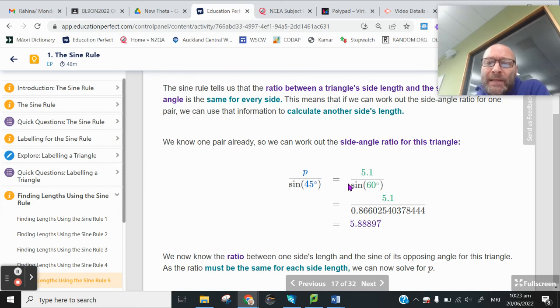What they did here is they did the sine of 60 in their calculator and got this great big number. You wouldn't want to round that. Anytime you round that, you're losing a little bit of accuracy. All right, and then we've got 5.1. This big line means to divide. 5.1 divided by 0.8660 gives us 5.88897.